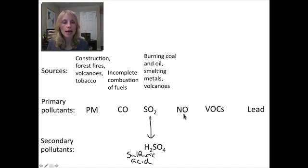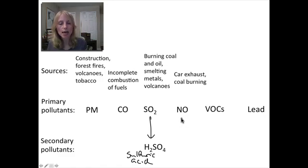Nitrogen oxide comes primarily from car exhaust and also from coal burning. This also irritates the respiratory system, can aggravate asthma and other breathing problems. When it reacts with the atmosphere, it forms nitrogen dioxide (NO2) and nitric acid (HNO3). Nitric acid is another component of acid rain.